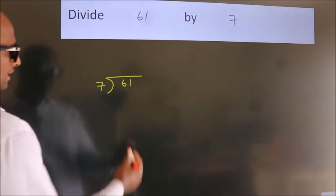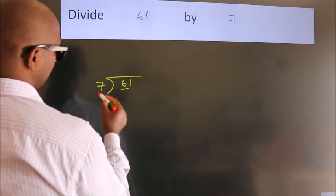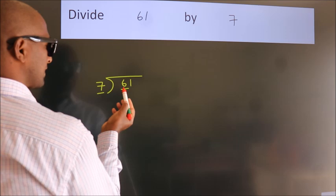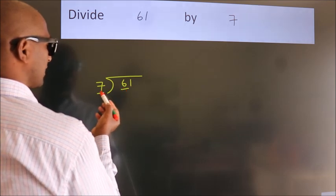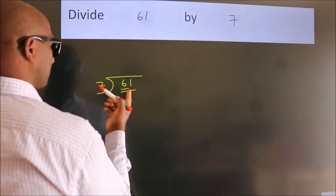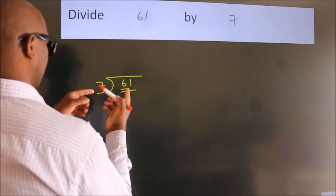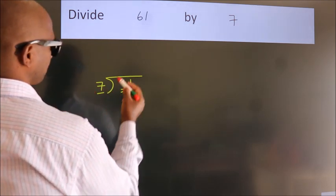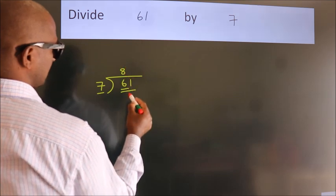Here we have 6. Here 7. 6 is smaller than 7. So, we should take two numbers: 61. A number close to 61 in the 7 table is 7 times 8, 56.